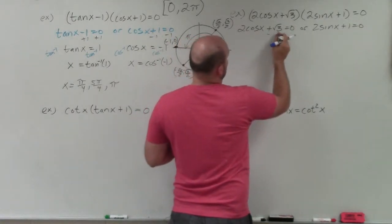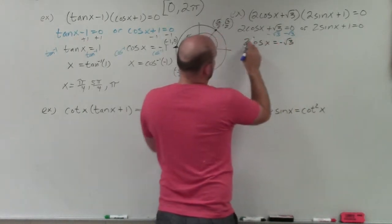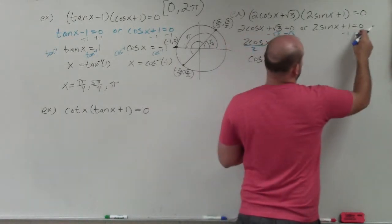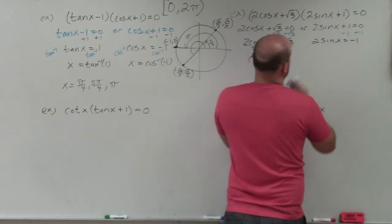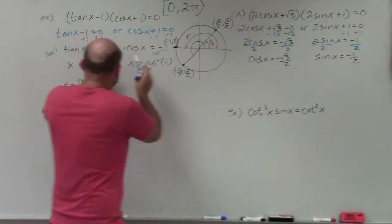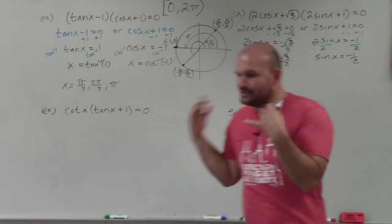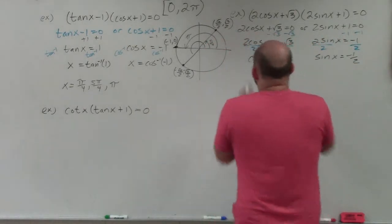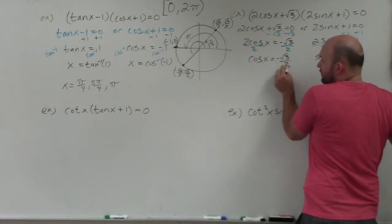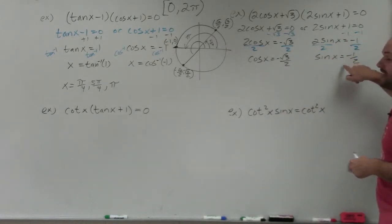Solving both for my trig function: 2cosine(x) = −√3, divide by 2, giving cosine(x) = −√3/2. Over here, subtract 1 on both sides: 2sine(x) = −1, divide by 2, giving sine(x) = −1/2. Rather than explicitly taking inverse cosine and inverse sine of both sides, I'll go straight to finding solutions — asking what angle gives cosine equal to −√3/2, and what angle gives a y-coordinate of −1/2 for sine.